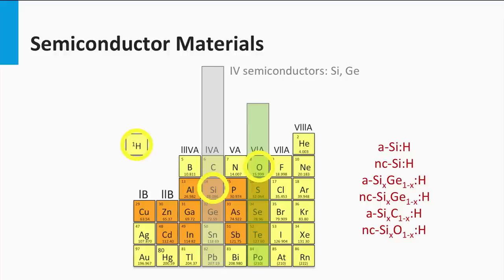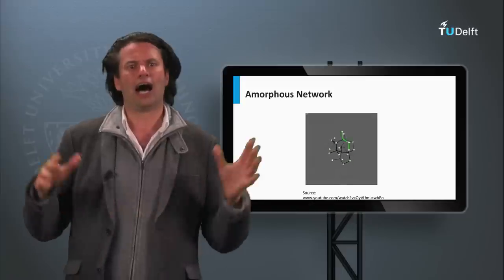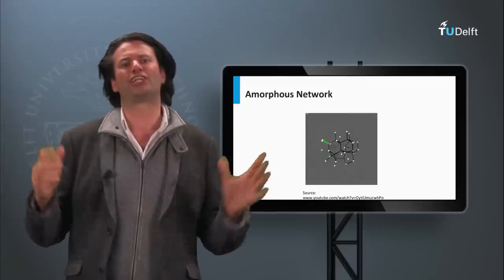All these alloys can be doped. Even the nanocrystalline silicon oxide can be doped p-type by adding boron, or n-type by adding phosphorus.